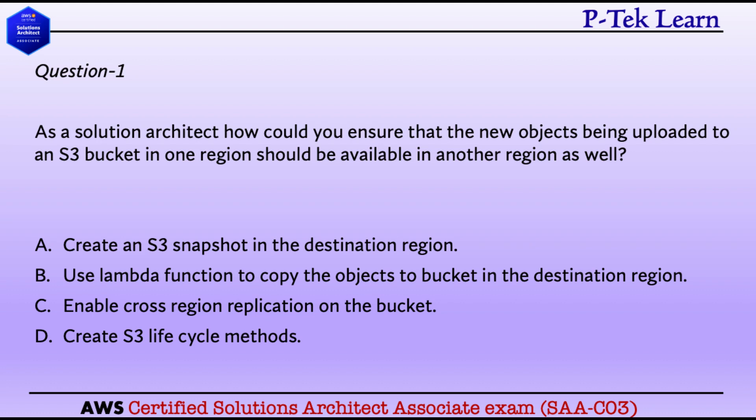Option A: Create an S3 snapshot in the destination region. Snapshots are used to take a backup of an existing S3 bucket — they are not used to replicate each object while an upload is in progress. So Option A is not the correct answer. Option B: Use a Lambda function to copy the objects to a bucket in the destination region.